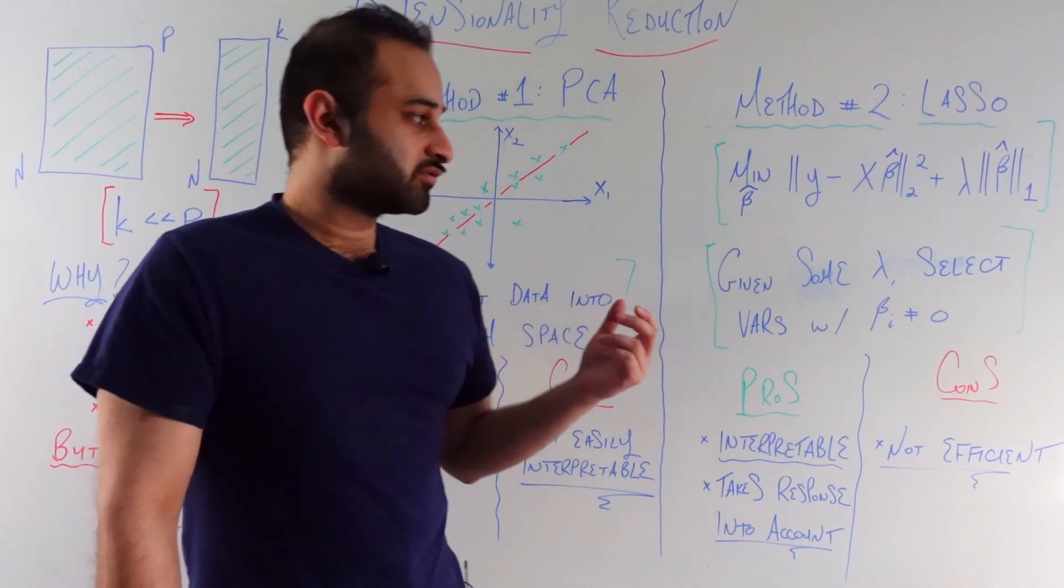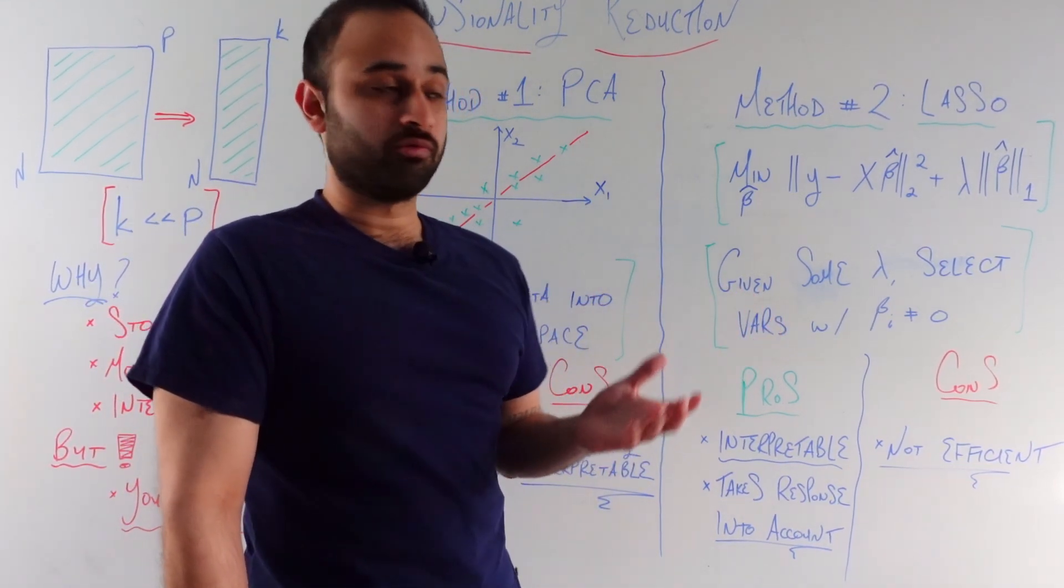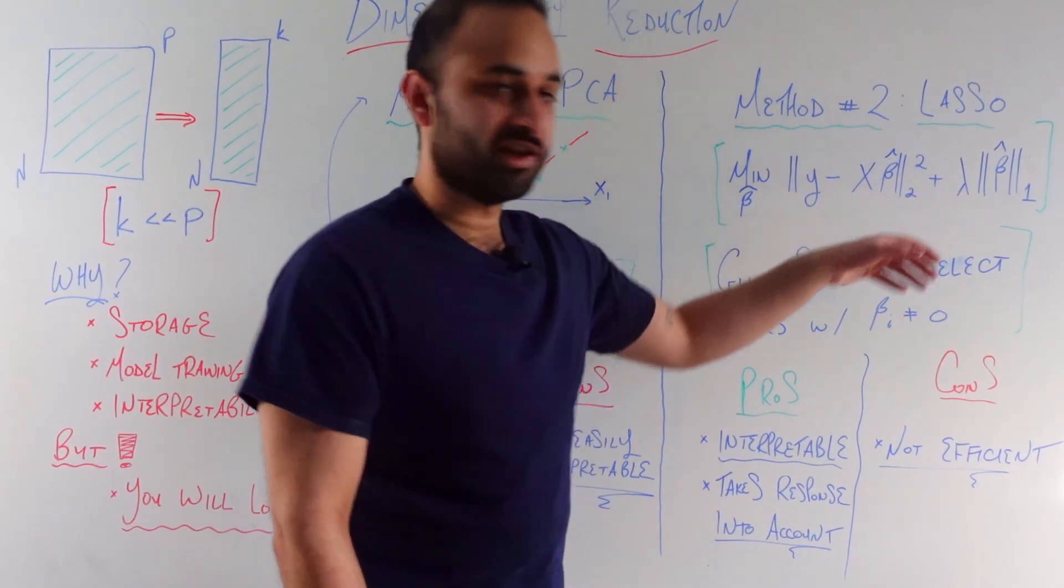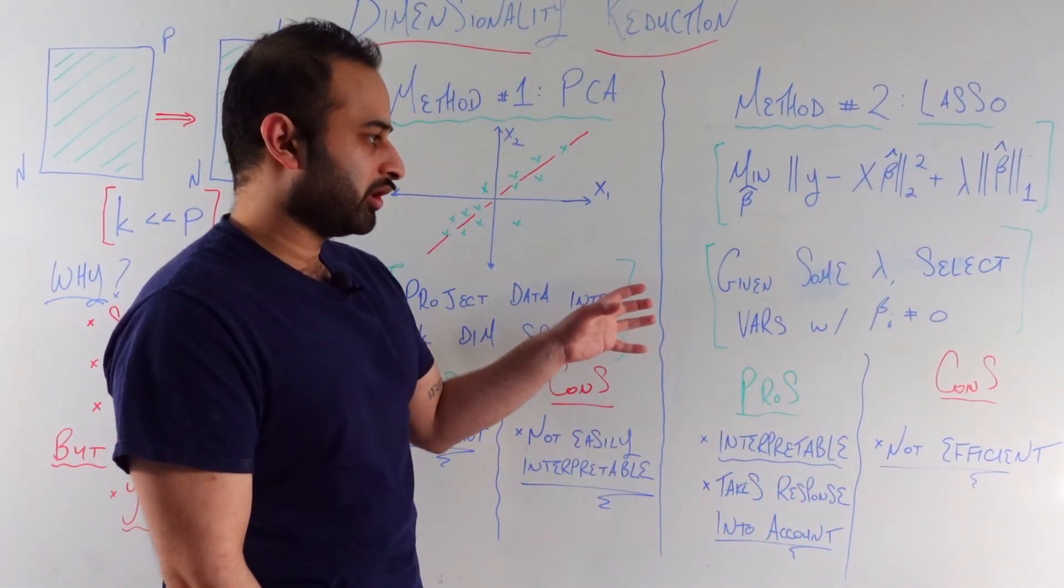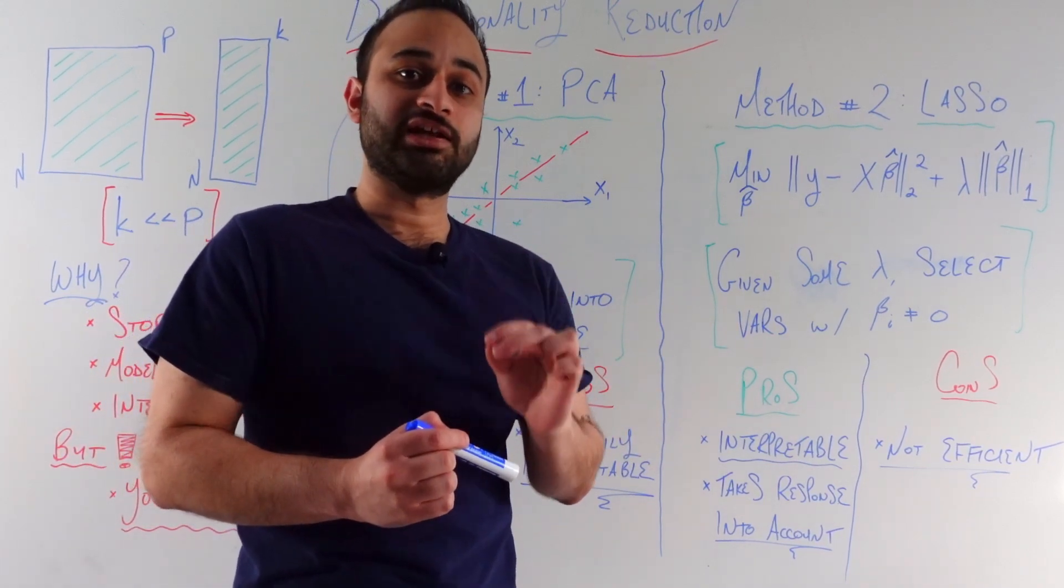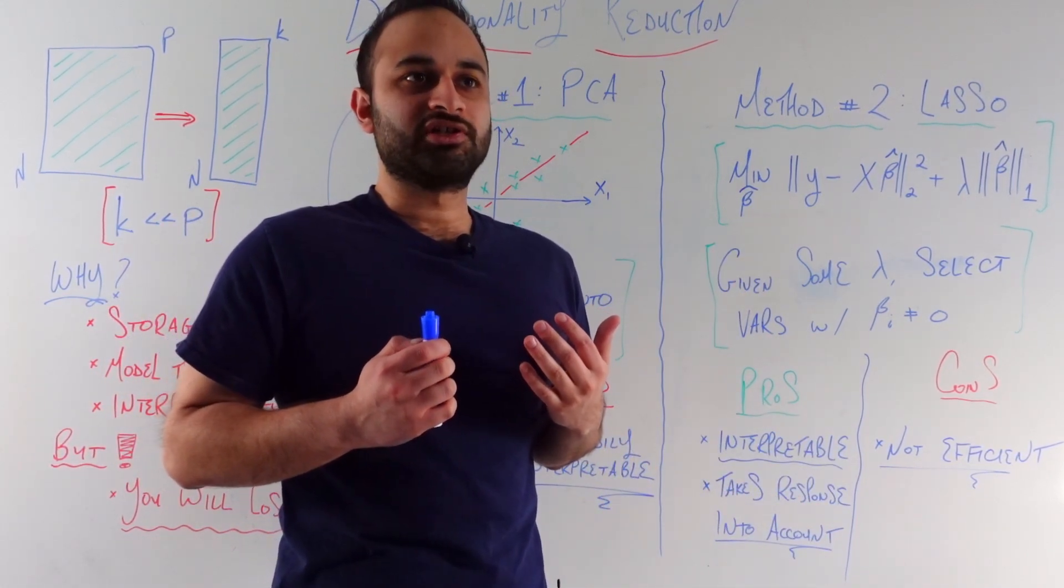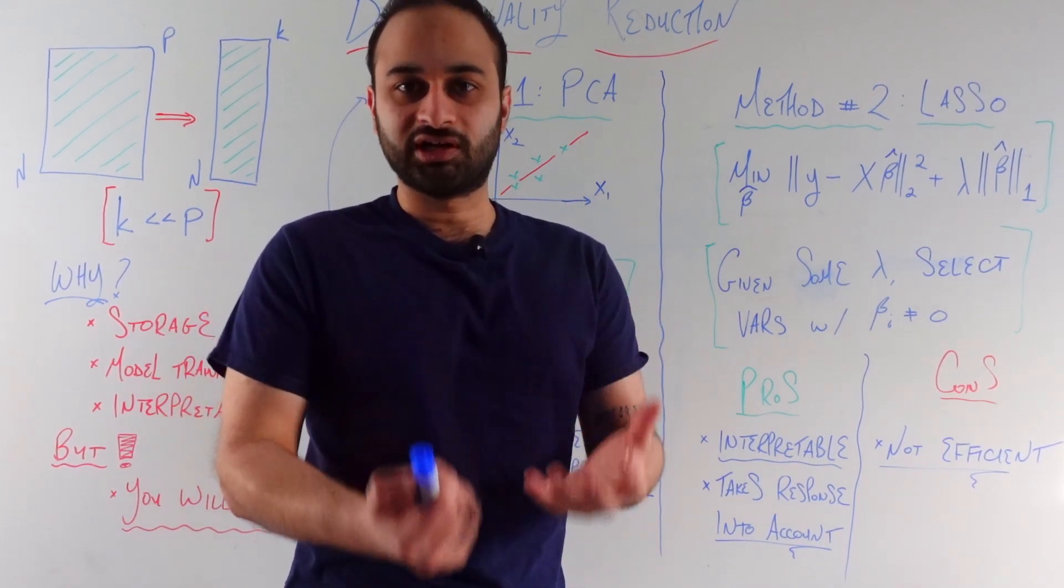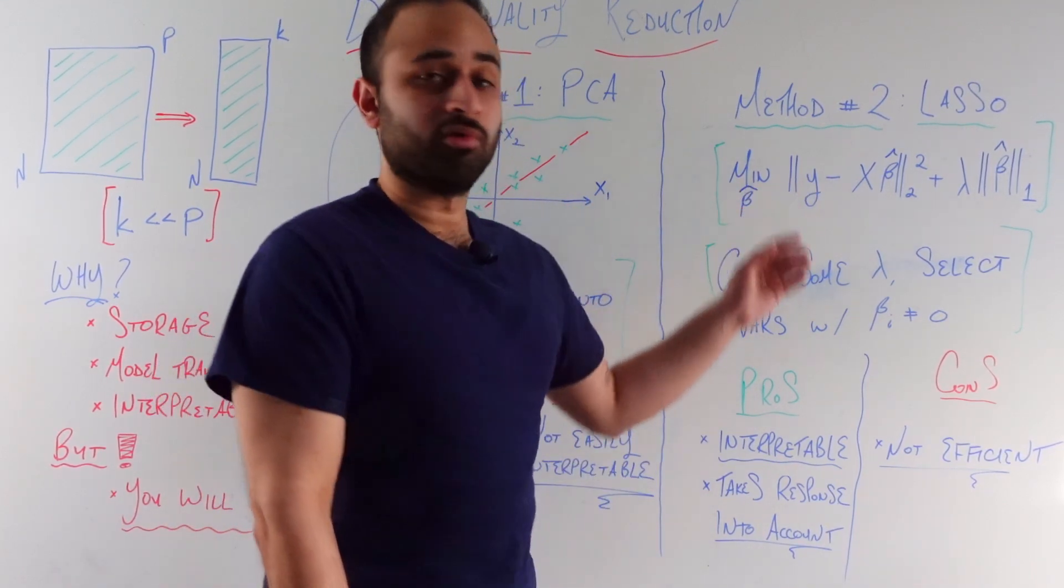And so we can actually use this for feature selection because we can run this. So let's say we fix some kind of lambda, which is a parameter, and then we can just pick the variables whose beta_i's are not sent to exactly zero. In some sense, the model considers these as important or predictive of this target variable y.